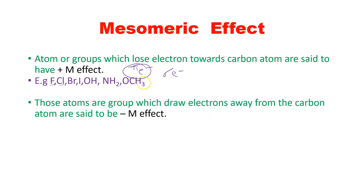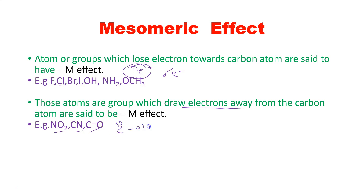Groups or atoms which draw electrons away from the carbon are said to have a minus M effect — negative mesomeric effect. Such groups include nitro, cyano, and carbonyl groups. All carbonyl-containing groups — carboxylic acid, aldehyde, ketone, amide — fall into one category and exert a minus M effect.